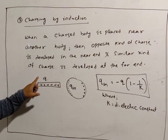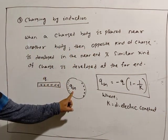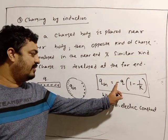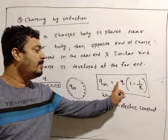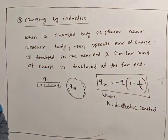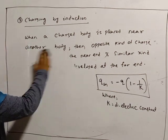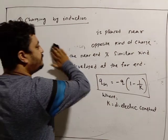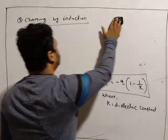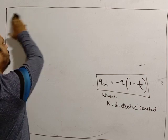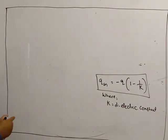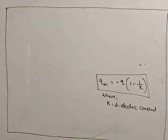So if the inducing charge is Q, the induced charge will be of opposite kind. We can write Q_induced = −Q × (1 − 1/K). Let's apply this formula to solve problems.